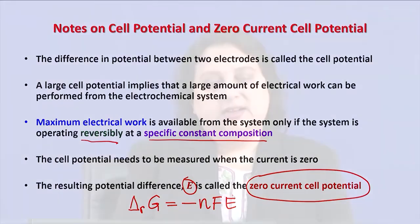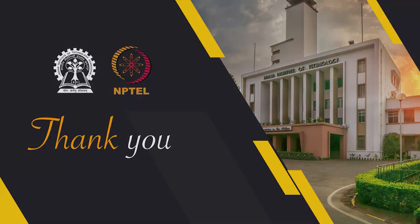In the next lecture, I am going to talk about a more useful form of the relationship between the zero current cell potential and the reaction Gibbs energy. This is known as the Nernst equation, which many of you may have seen during high school. We will see how to derive the Nernst equation from the considerations presented here. Thank you.